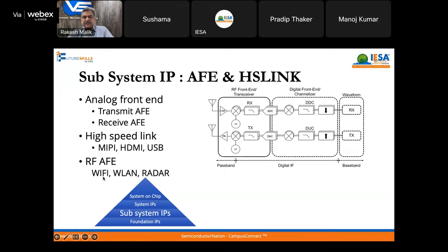There are various standards for RF AFE, including Wi-Fi, radar, and Bluetooth. These are some of the subsystem IPs in terms of RF. There are also high-speed link IPs — specific links used in various applications. For example, MIPI is used for camera and display, HDMI is for video, and USB is a complex subsystem block that everybody knows.